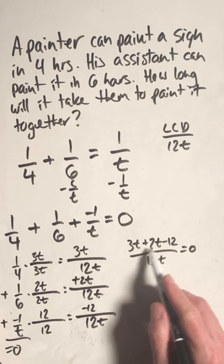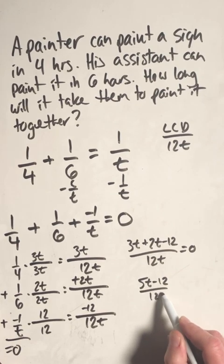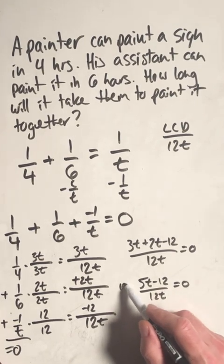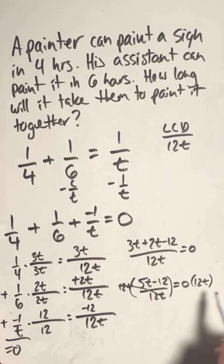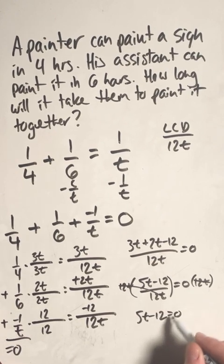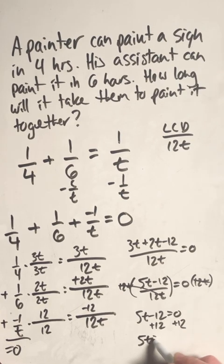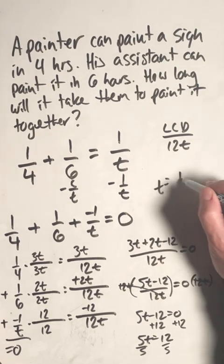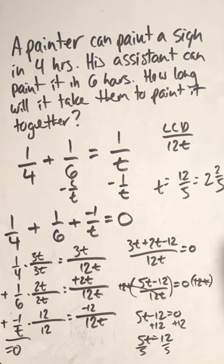Now I can simplify 3t plus 2t is 5t, so this is 5t minus 12 over 12t equals zero. To solve this equation now, I can multiply both sides by 12t. That's going to cancel it here, and this is going to make it zero here. So 5t minus 12 equals zero. Add 12 to both sides, and I have 5t equals 12. Divide both by 5, and I'll have t equals 12 fifths, or 2 and 2 fifths hours.